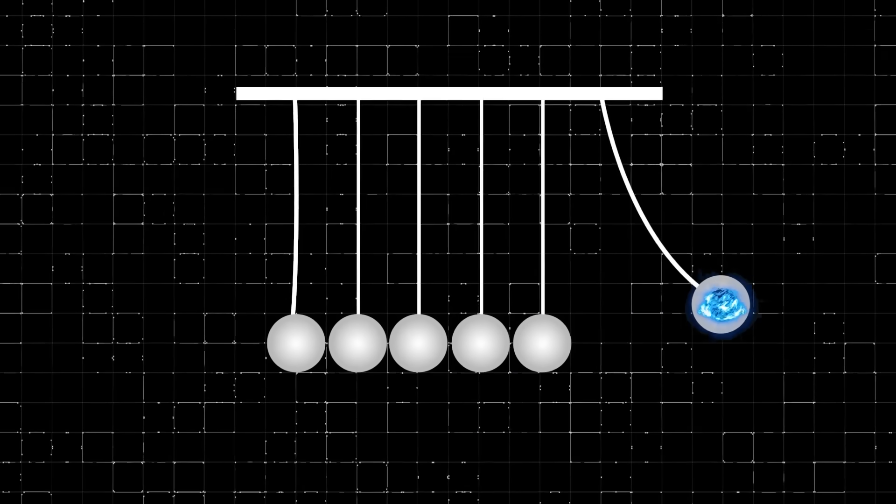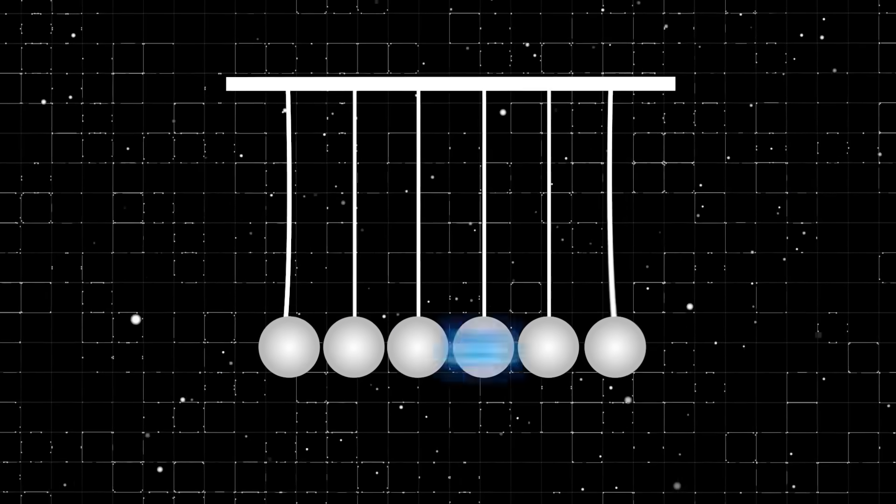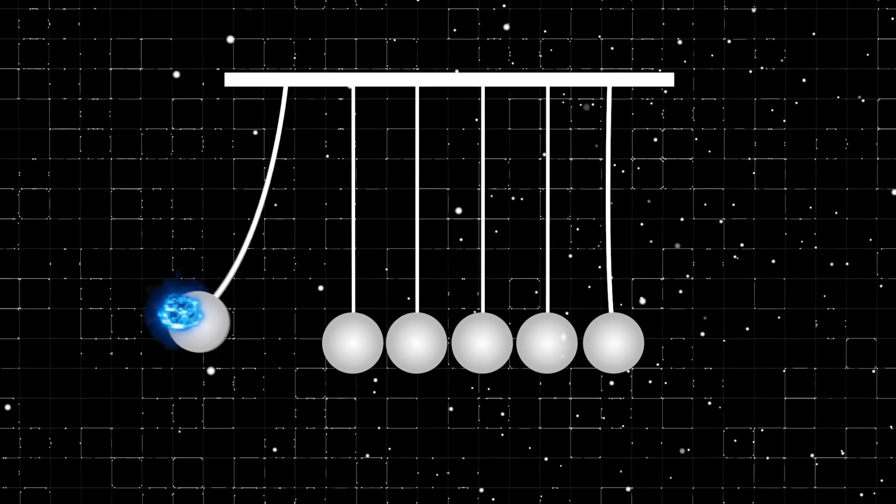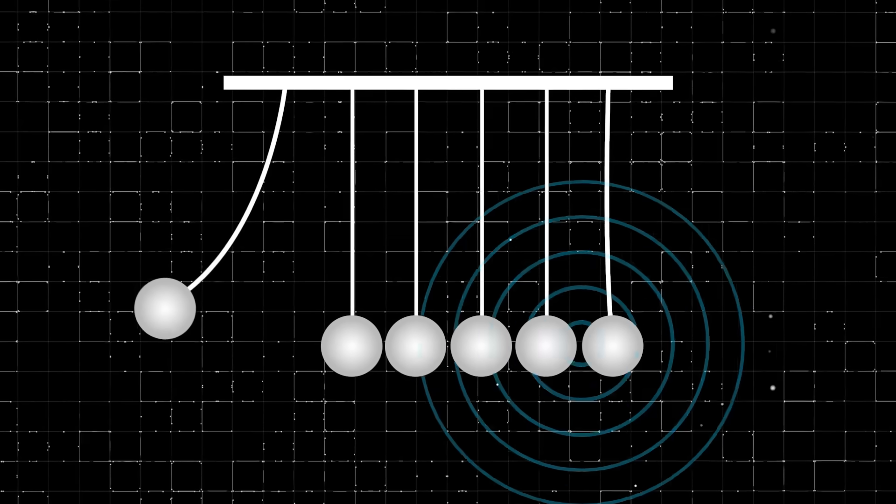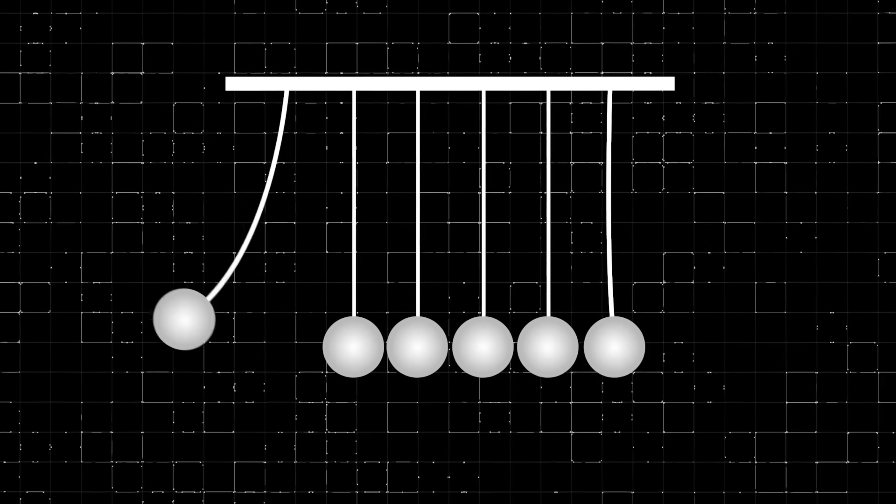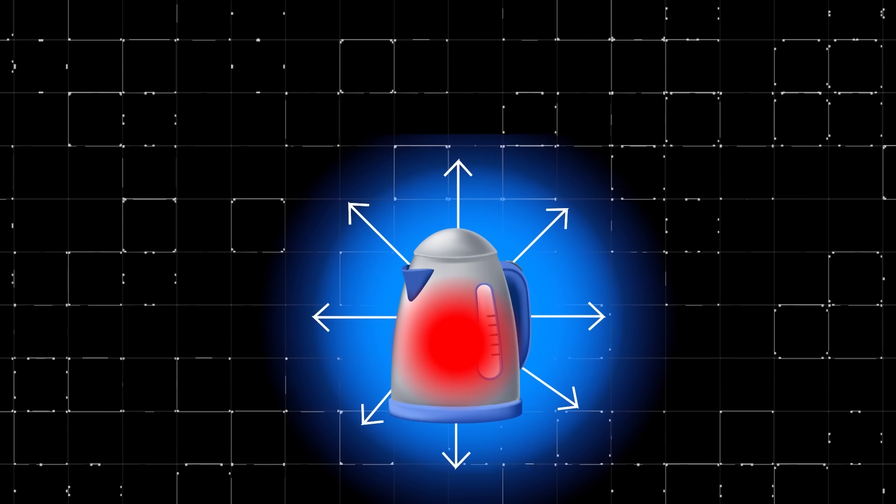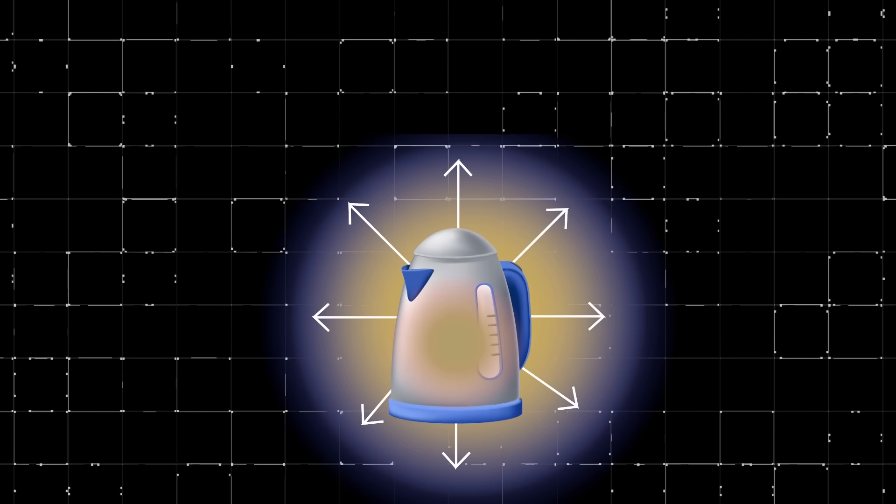This is why it's not a perpetual motion machine, because the steel balls lose energy to many things: to the air as friction as they move through it, they also create sound energy when they collide with each other, and they lose energy to heat upon collision, although in this example it's very minuscule.